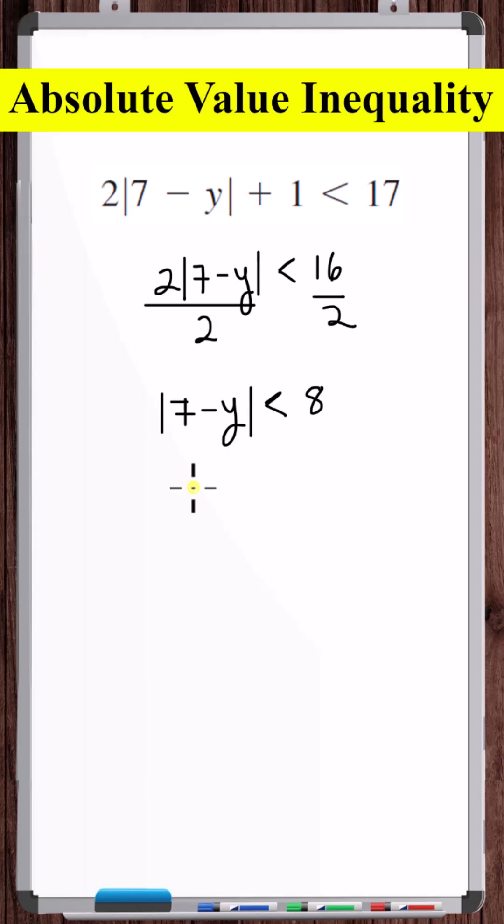Now if we check the properties of absolute value inequalities, we see that we have the absolute value of a variable expression is less than a constant that's greater than 0. This is equivalent to minus the constant is less than the expression, which at the same time is less than the positive constant.